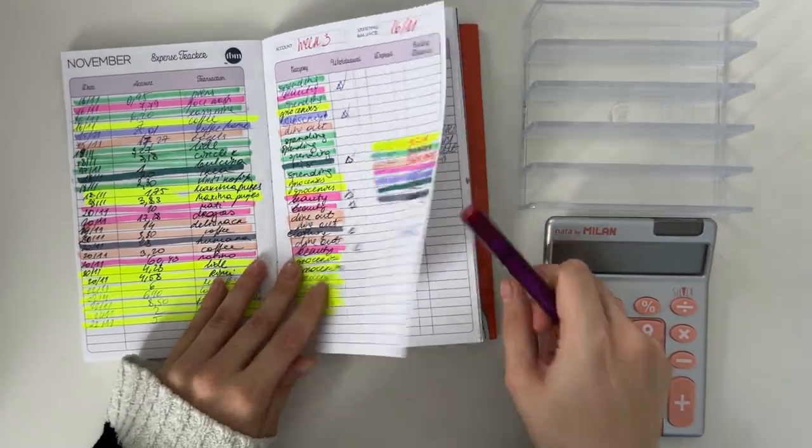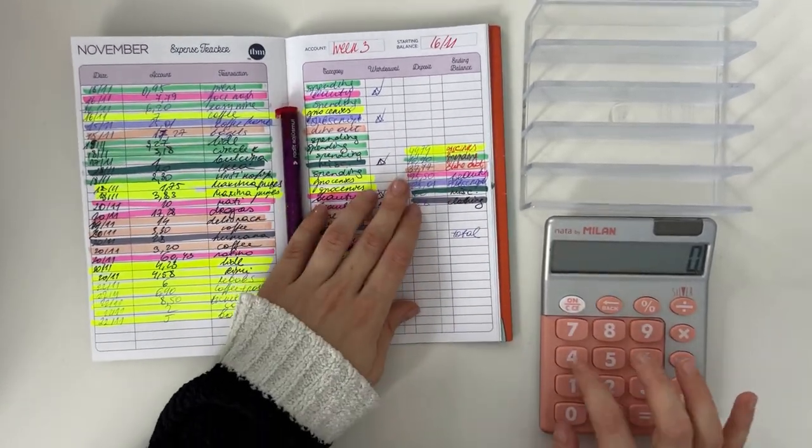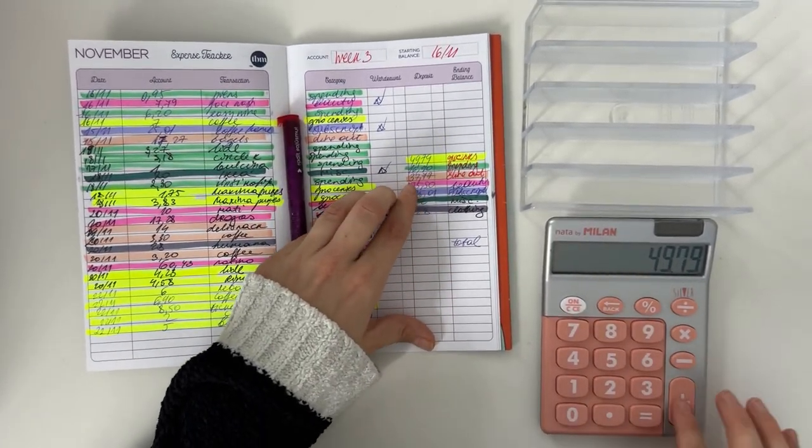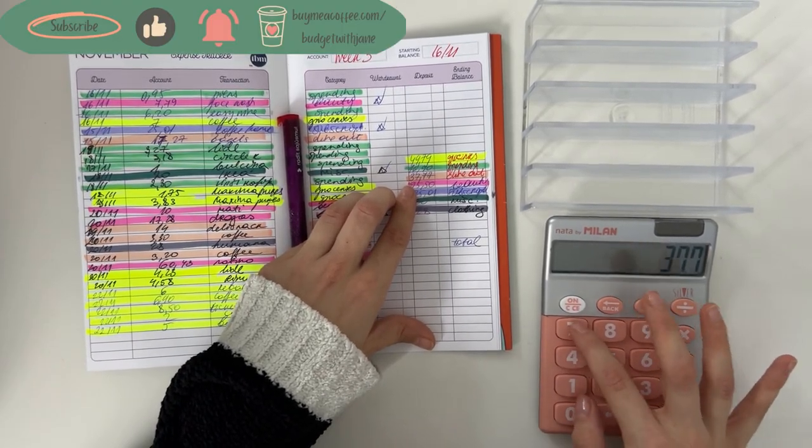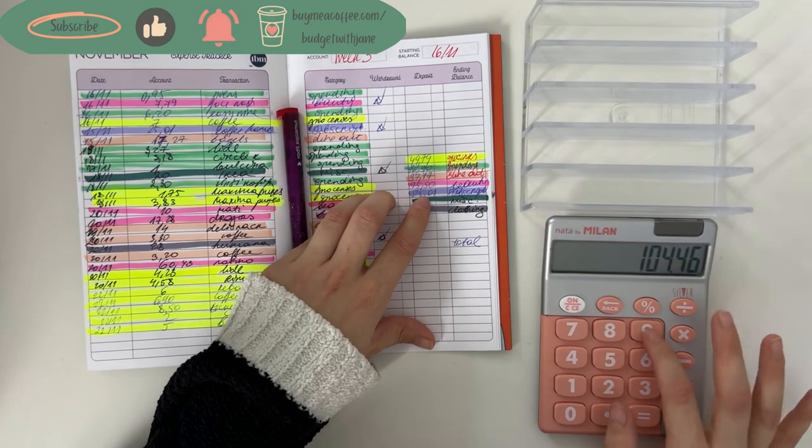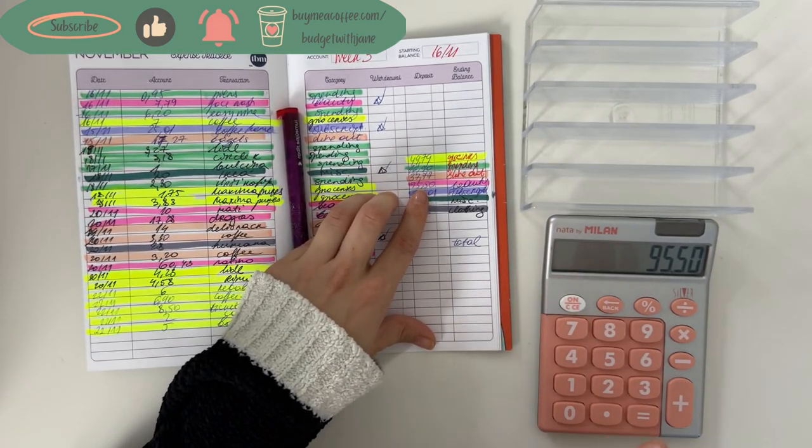Let's just start counting. So we spent 49.79 in groceries, 16.90 in spending, 37.77 in dine out, 95.50 in beauty. I got my haircut and I got a couple of things for beauty products and hair care. I had Black Friday, like pre-Black Friday sales.